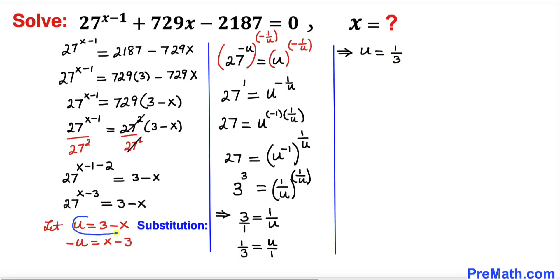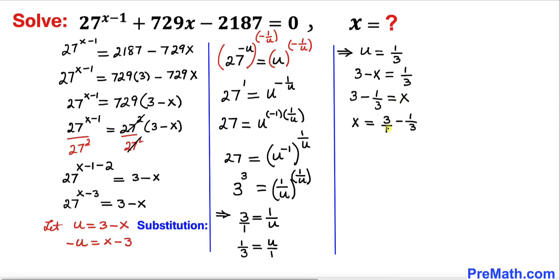Since u equals 3 minus x, we replace u with 3 minus x, giving us 3 minus x equals 1 over 3. Moving x to the right and 1 over 3 to the left, we get 3 minus 1 over 3 equals x. Cross-multiplying: 9 over 3 minus 1 over 3 equals 8 over 3. Therefore x equals 8 divided by 3.